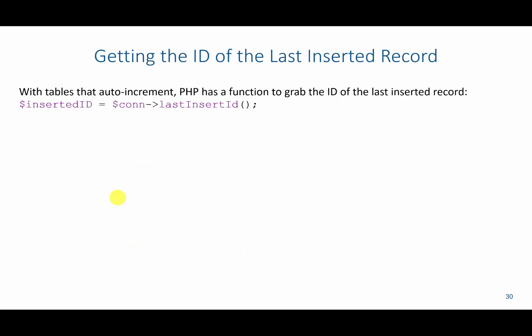Another very useful command is lastInsertId. What this does is look at the connection, see what was just inserted into the database, grab the primary key value of that last inserted record, and then store that value inside a variable — called insertId in this case.